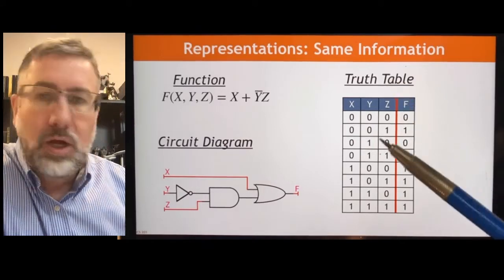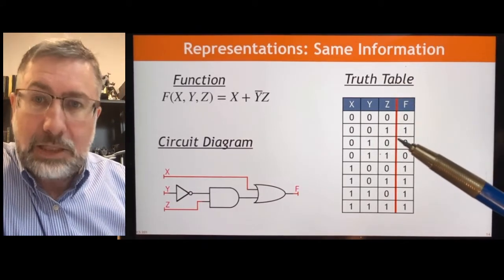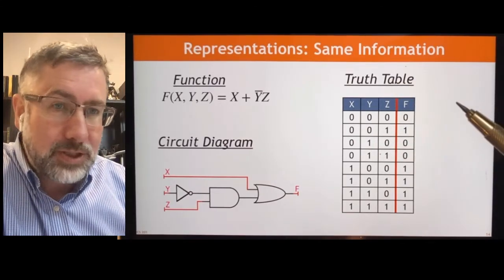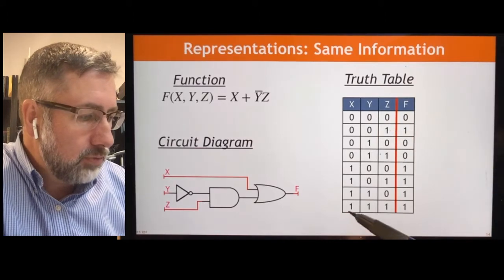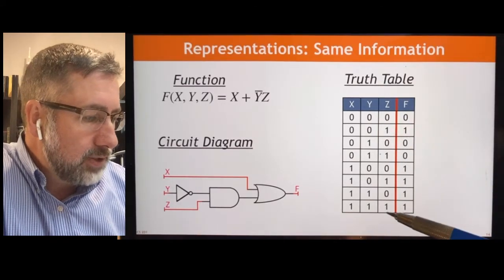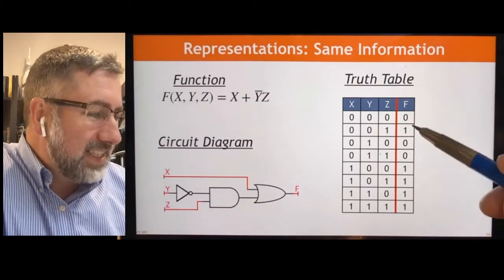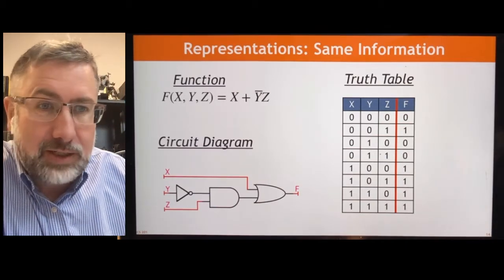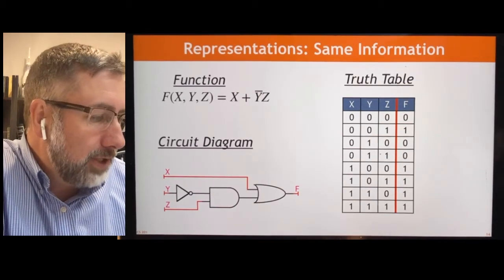Now the truth table is just an enumeration of all the possible input combinations and what the output will be for that function. So because we have three inputs, we have exactly eight possibilities for the inputs to this function. 0, 0, 0 through 1, 1, 1. This is 1. This is 7. And so we can see what the output is going to be based on those, based on those possible input combinations.